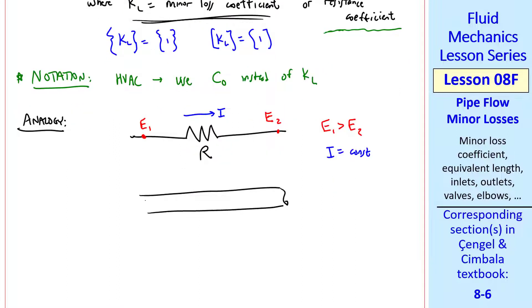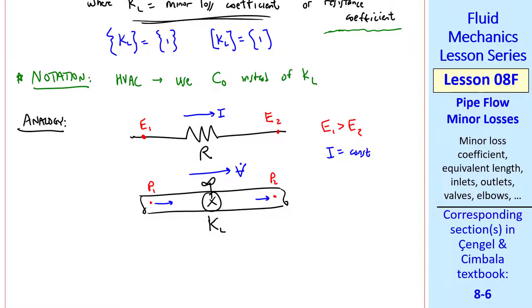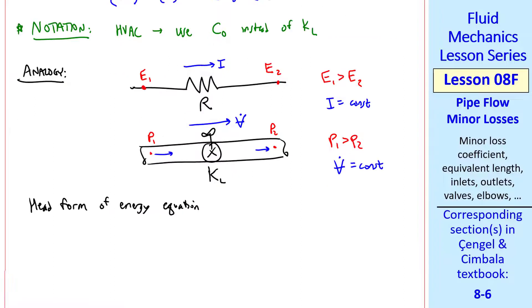The analogy is with the pipe, with some kind of a minor loss, again here's a valve. Resistance is analogous to the minor loss coefficient, current is analogous to volume flow rate, and voltage, also called electric potential, is analogous to pressure. So here P1 is greater than P2, but volume flow rate remains constant.